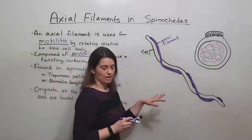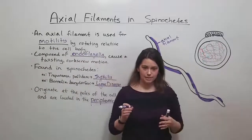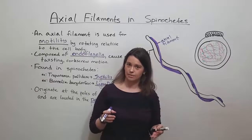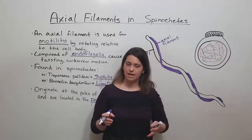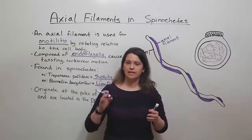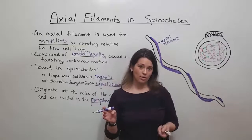They're located in a portion of the cell known as the periplasmic space. What does that mean? Periplasmic space is the space in gram-negative bacteria that is between the inner membrane and the outer membrane.